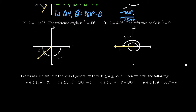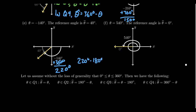Two other examples: take theta to be negative 140 degrees — that terminates in the third quadrant, and the reference angle would be 40 degrees. If you want to do it numerically, add 360 degrees to put it in the range 0 to 360 — that gives you 220 degrees. Then, how far past 180 degrees is 220? 220 minus 180 equals 40 degrees, which is the reference angle.